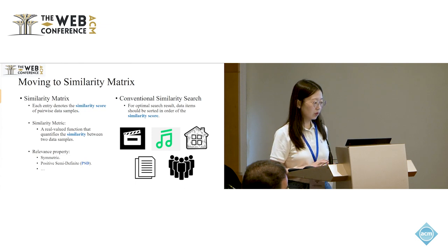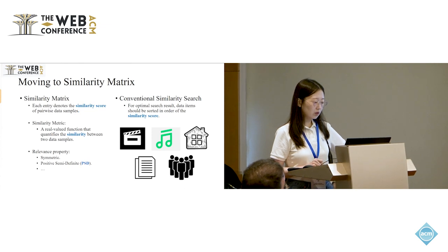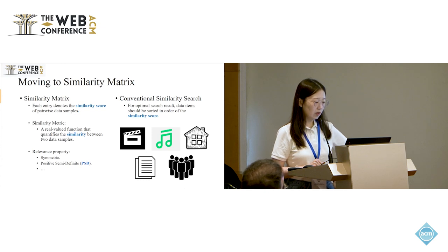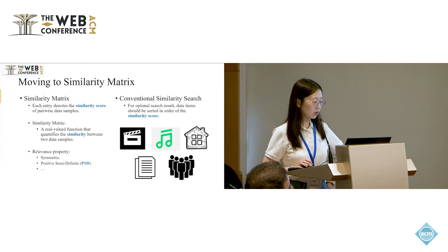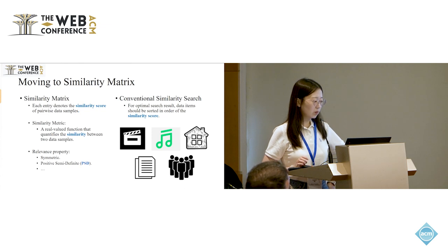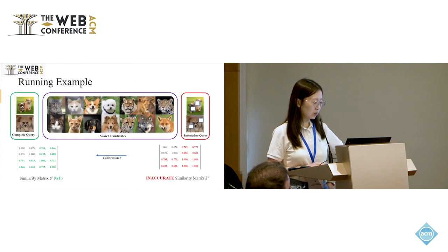Now let's move to the similarity matrix. Similarity matrix is widely used in the conventional similarity search problem, such as image retrieval, document classification, and the recommended system. It aims to find the most similar item in the search database with the highest similarity score, and the similarity score is the entry in the similarity matrix. The similarity score can be calculated by a specific similarity metric, such as cosine similarity or Jaccard similarity. Meanwhile, the similarity matrix enjoys several properties, such as the symmetric property and the positive semi-definite property.